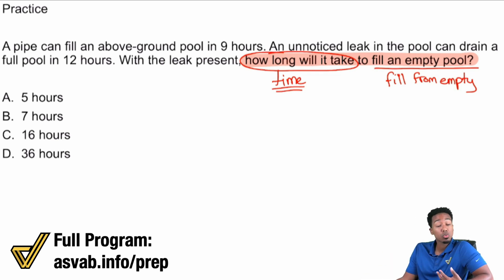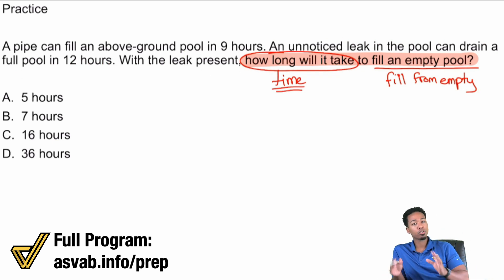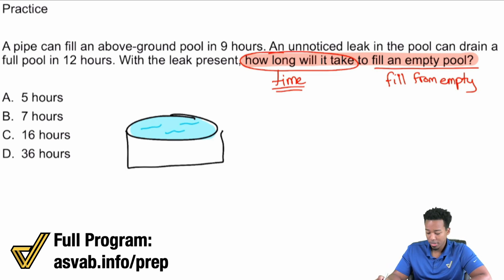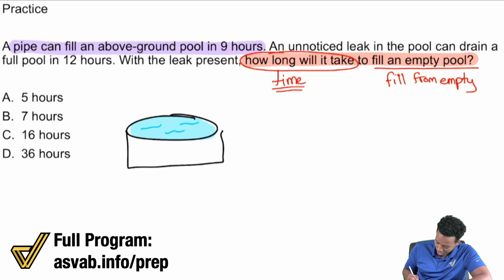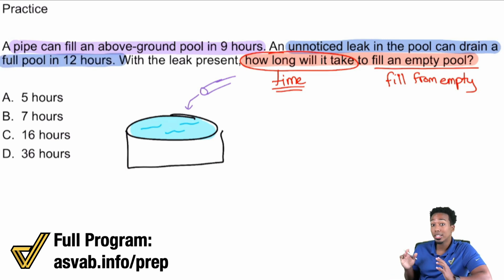Let's read the information we have and see what kind of problem we're dealing with. A pipe can fill an above ground pool in nine hours. An unnoticed leak in the pool can drain a full pool in 12 hours. With the leak present, how long will it take to fill the pool? From the story — and the story is more important than the numbers — we've got an above ground pool, and we're using a pipe to fill it in nine hours.